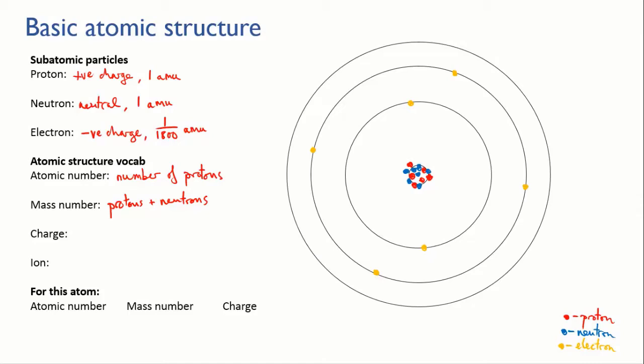So the mass number of this atom is six plus seven, which is thirteen. For this atom, we have an atomic number of six—that's six protons—and the mass number is the protons plus the neutrons, which is six plus seven, which is thirteen.